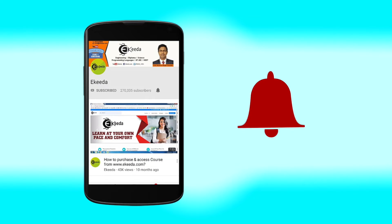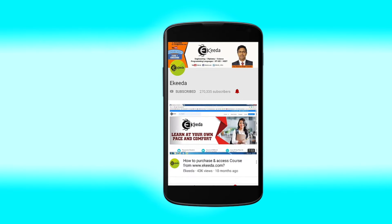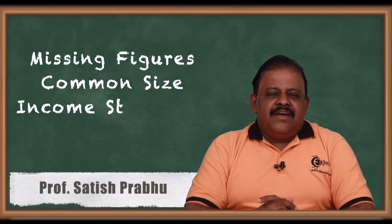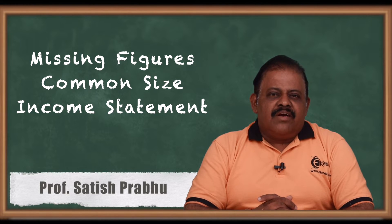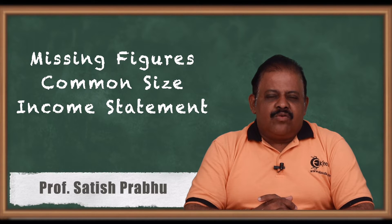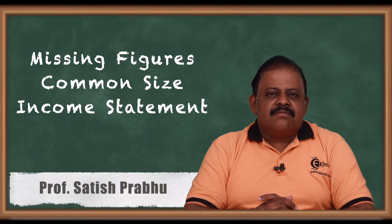Click the bell icon to get latest videos from Ekida. Hello friends, let us do one question of common size income statement where in the question they have given some missing information. We are required to use the logical order of format to find out the missing information, and then we are required to prepare a common size income statement.